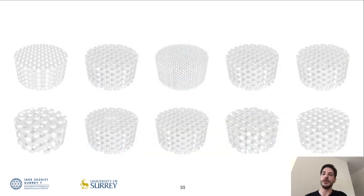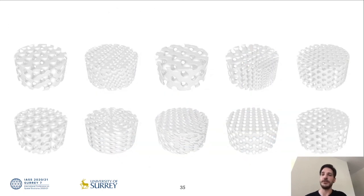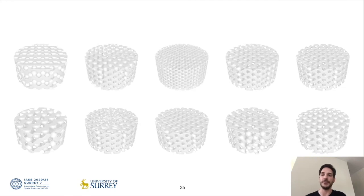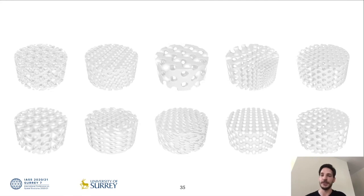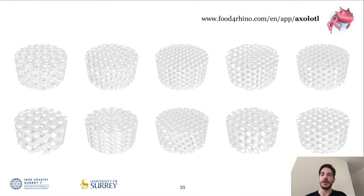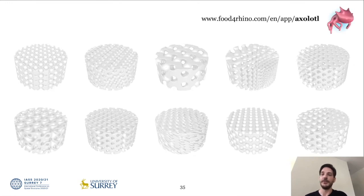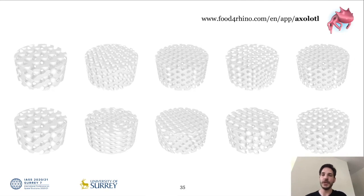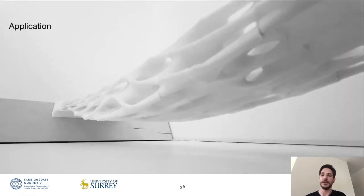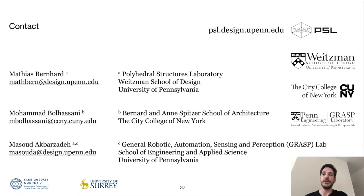To conclude, we introduce a robust computational design workflow that allows for the creation and modification of different families of porous lattices. All the presented examples are generated with my Grasshopper plugin Axolotl available on Food for Rhino. We are currently working on the application of these methods to large-scale architectural elements together with our industry partners in concrete additive manufacturing, and hope to present more of this work at future conferences. Thank you very much for your attention. If you are interested in our work and have questions or suggestions, don't hesitate to contact us.